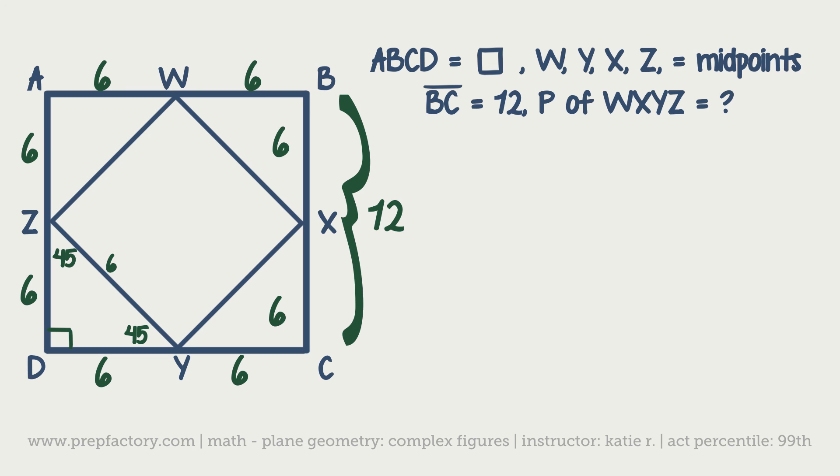We know that the hypotenuse is 6 radical 2. And because this is a square and we've got the same exact triangles on all the other corners, all of the hypotenuses here are going to be 6 radical 2.